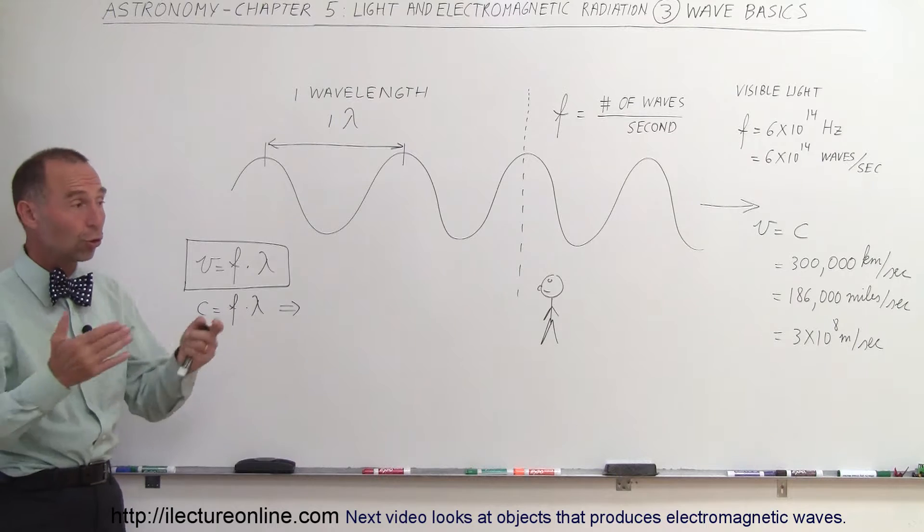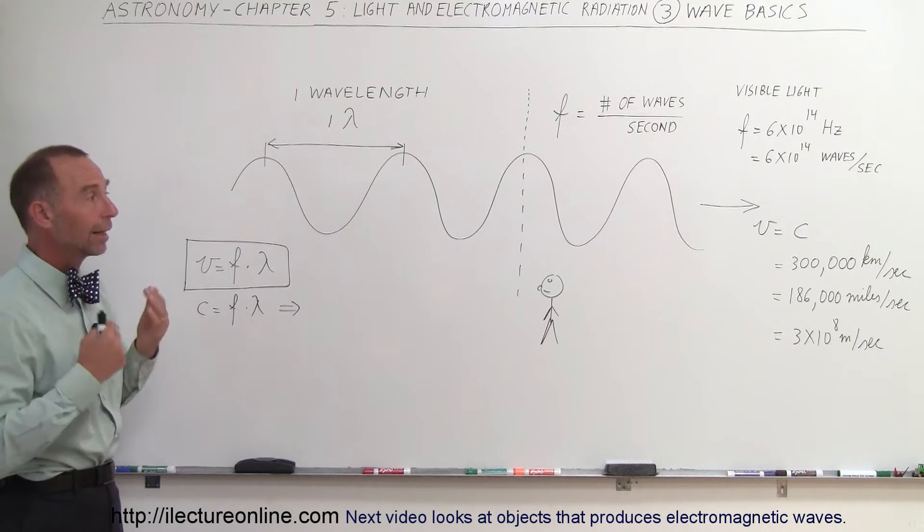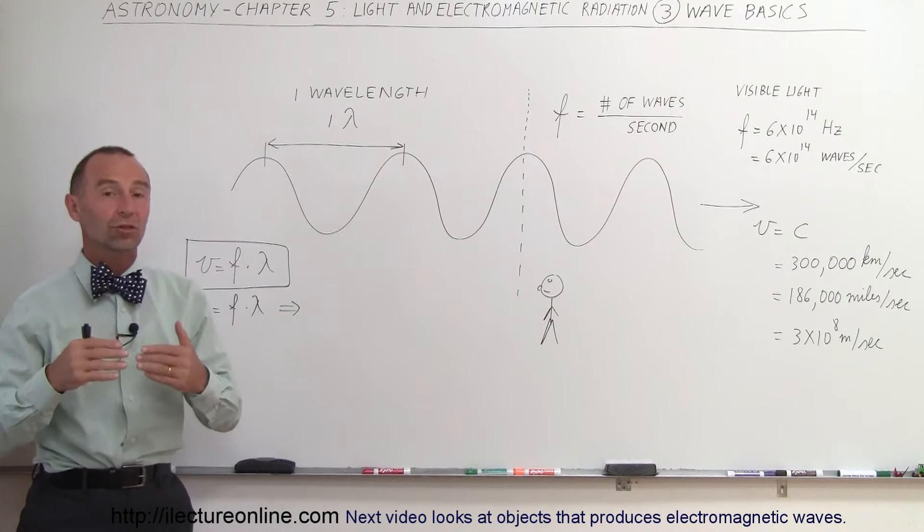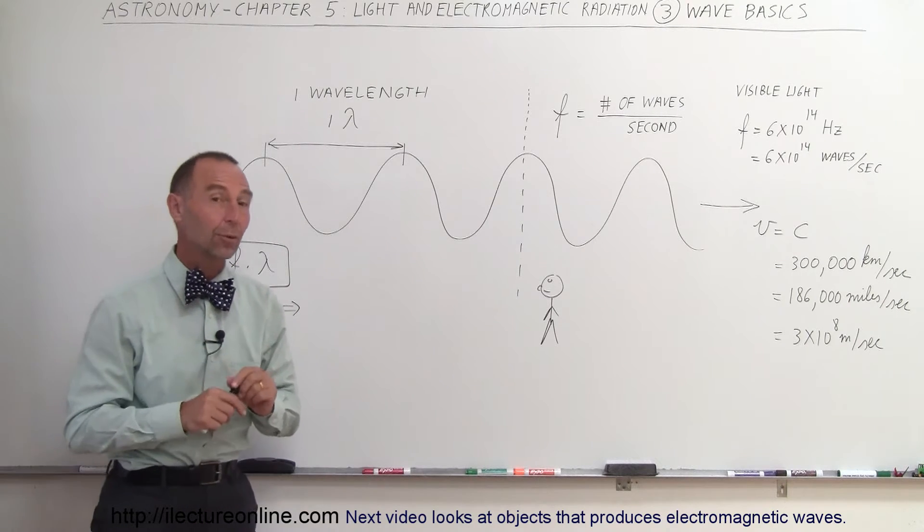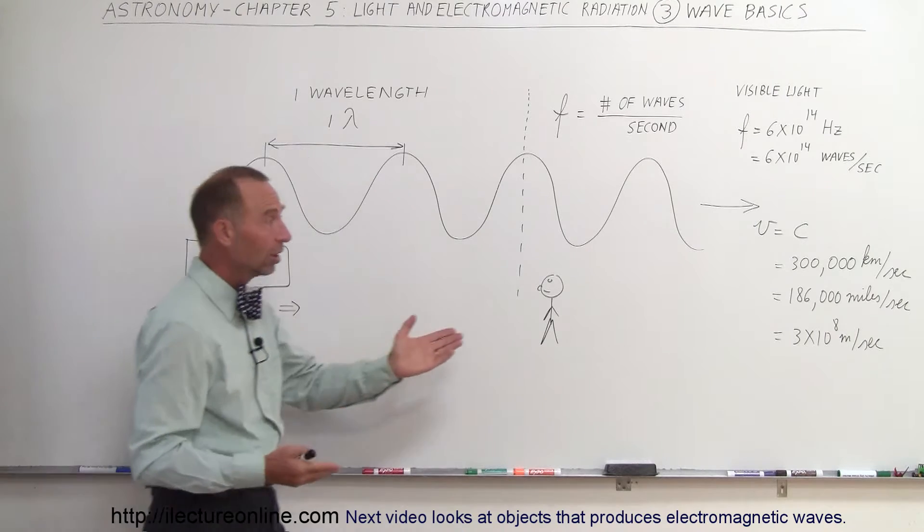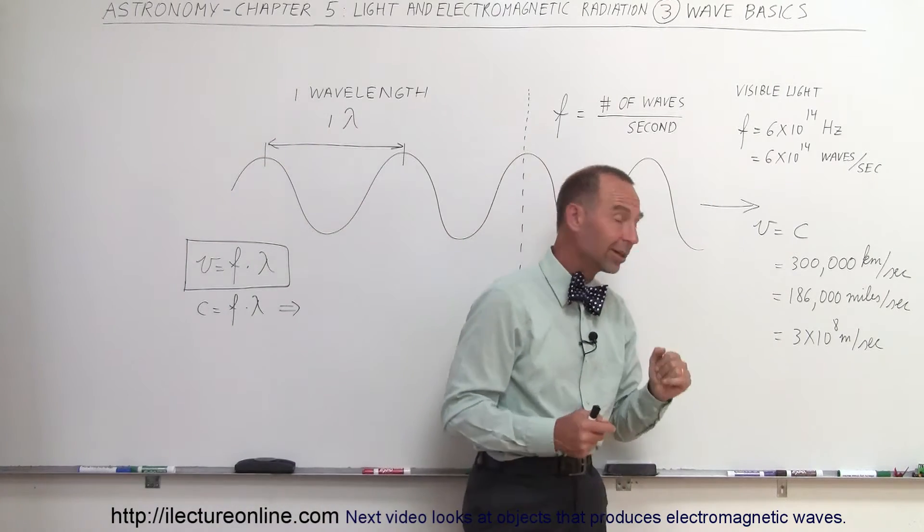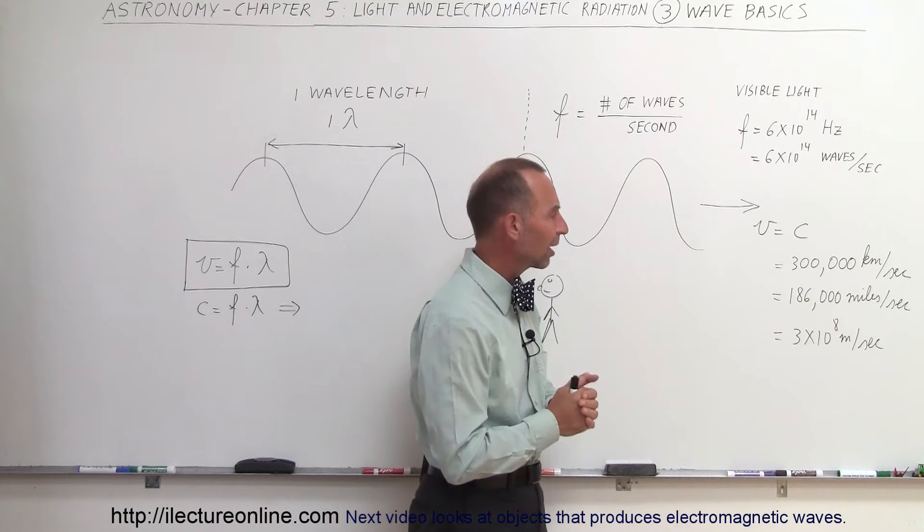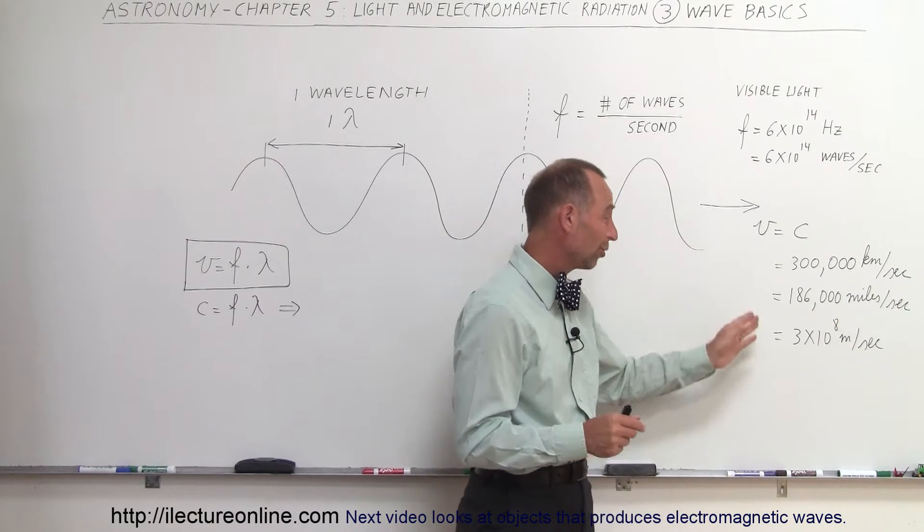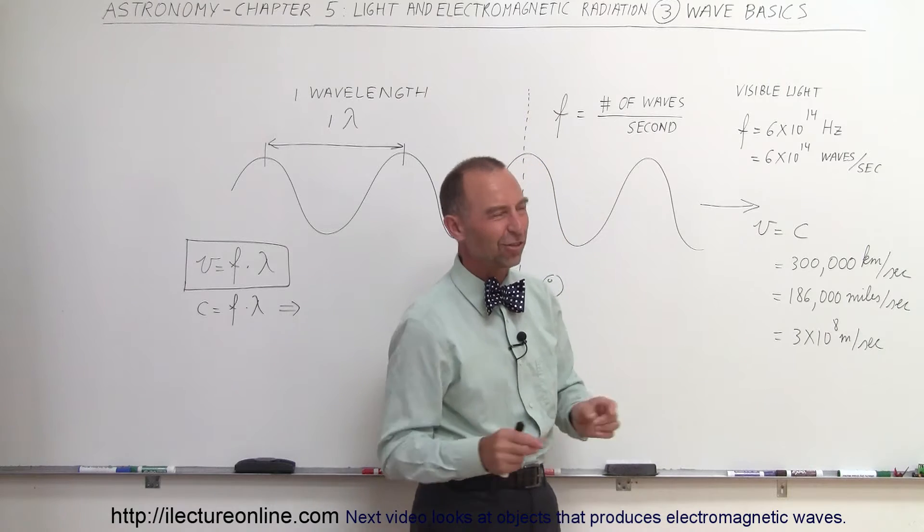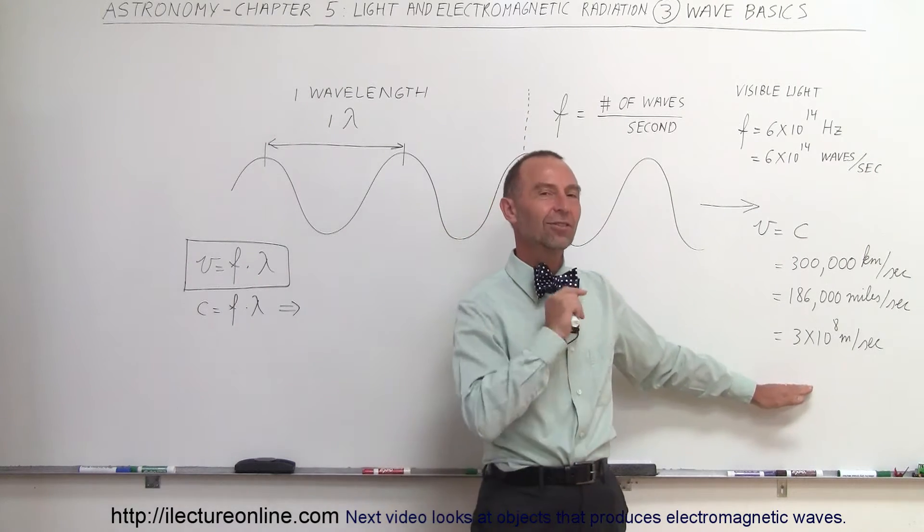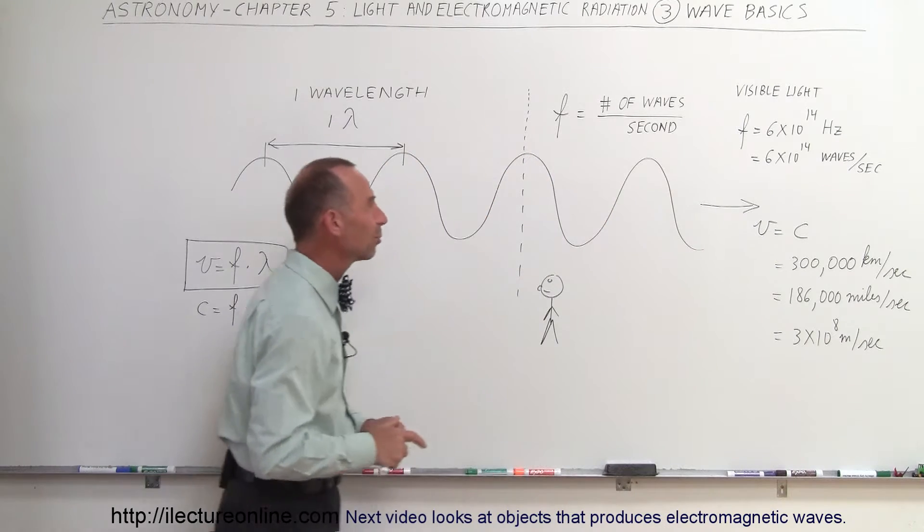All waves will travel. Ocean waves travel across the ocean. Electromagnetic radiation travels through space. And all waves will have a certain velocity. In the case of electromagnetic radiation, that velocity happens to be the speed of light, which is 300,000 kilometers per second, 186,000 miles per second, or sometimes we write as 3 times 10 to 8 meters per second. Notice I'm not using many significant figures here. It's actually 2.997 or something like that. But for us, that's good enough. 3 times 10 to 8 meters per second.